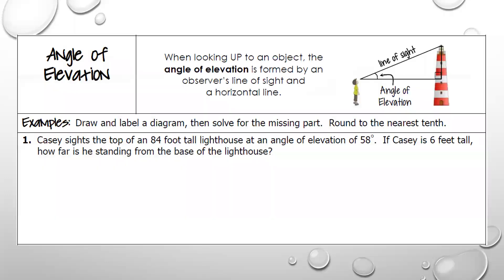We are going to be using what we've learned in this unit so far — using possibly the Pythagorean theorem, using maybe our special right triangles, but especially using our trigonometry to solve problems. We're just going to turn them into word problems. One thing you need to know is an angle of elevation. When I think of an angle of elevation, I think of someone or something looking straight out horizontally, then looking up. The angle created by that horizontal line and the line of sight is called the angle of elevation.